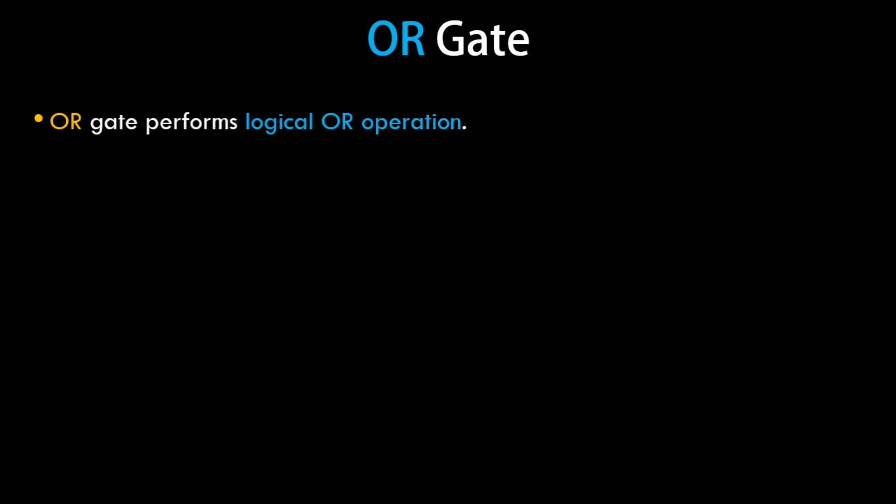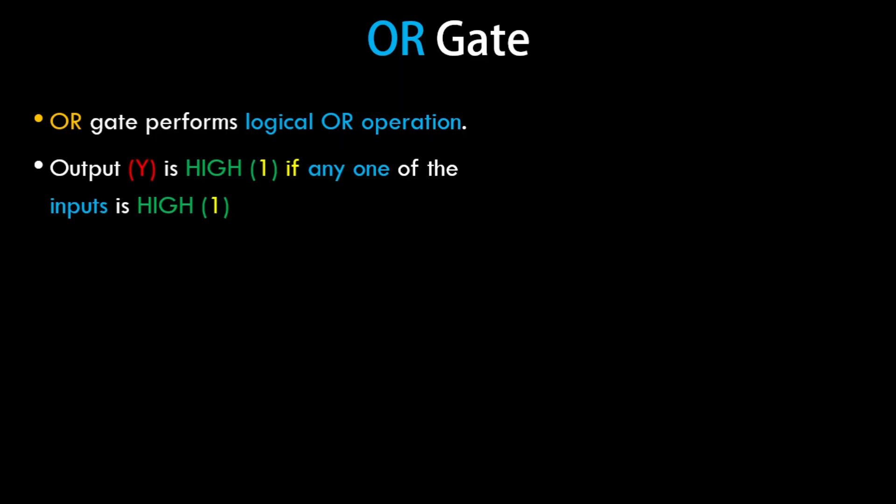An OR gate performs a logical OR operation. We've seen this operation in previous tutorials where we discussed basic Boolean operations — these operations are practically carried out by these logical circuits. The output is high, that is 1, if any of the inputs is 1.